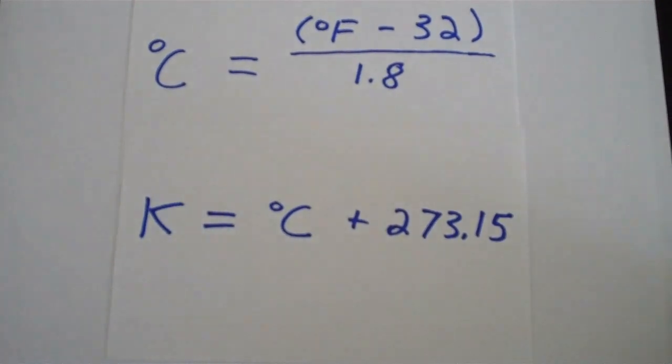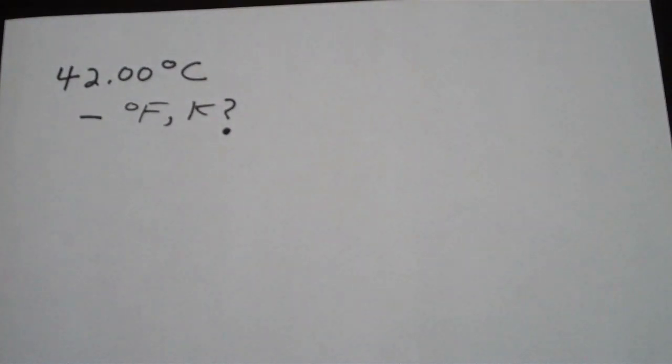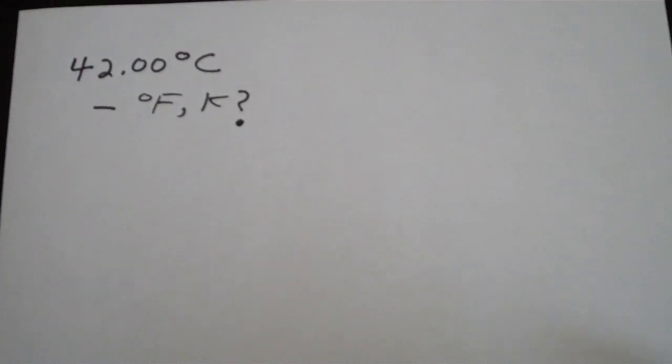So let's go through an example real quick. Here we have 42.00 degrees Celsius and we want to convert that to Fahrenheit and also to Kelvins.